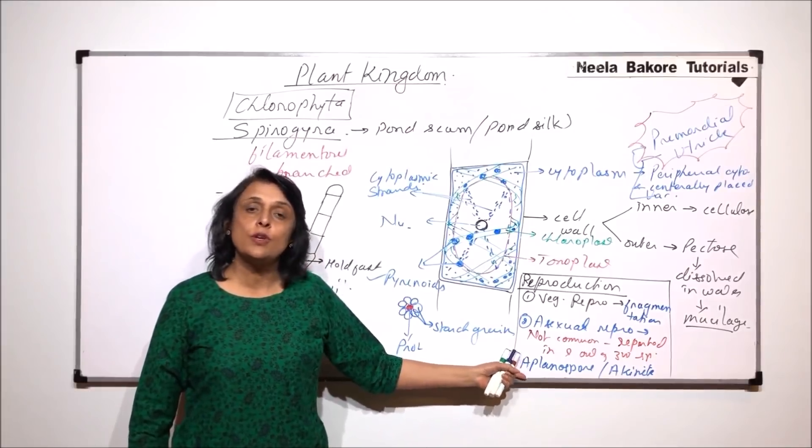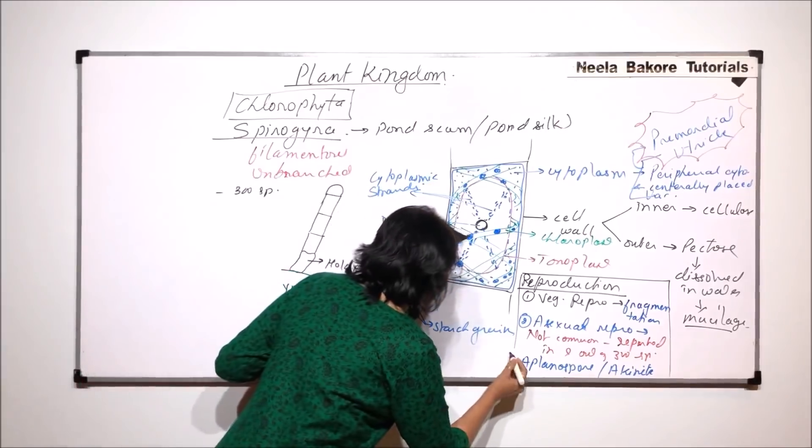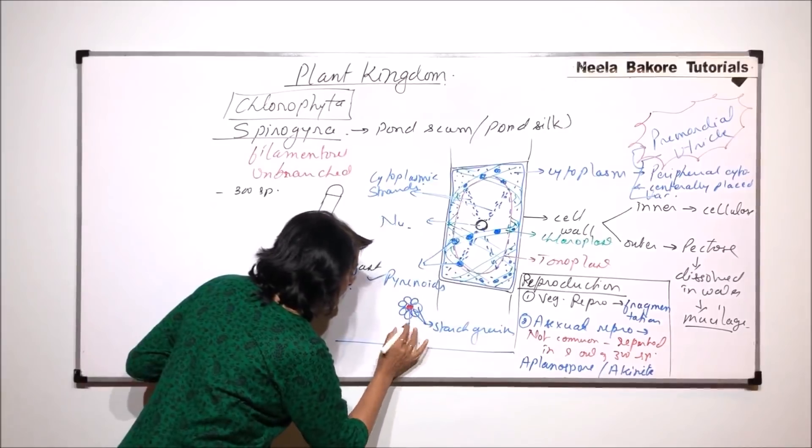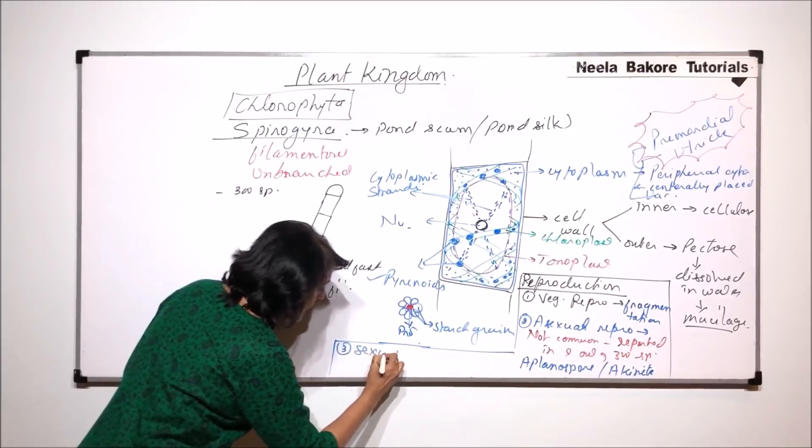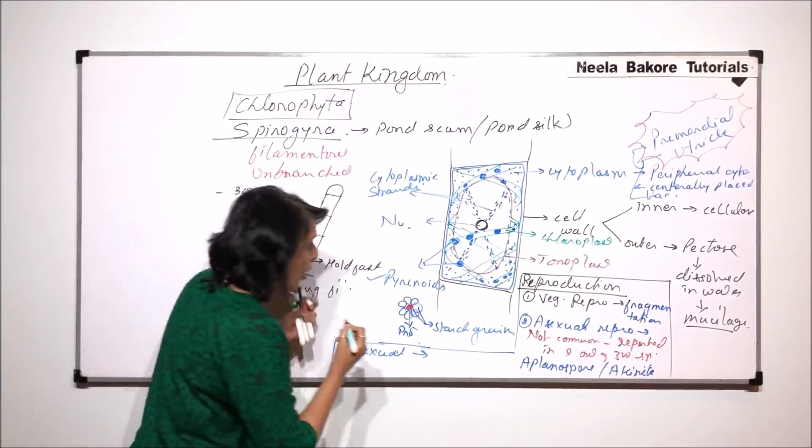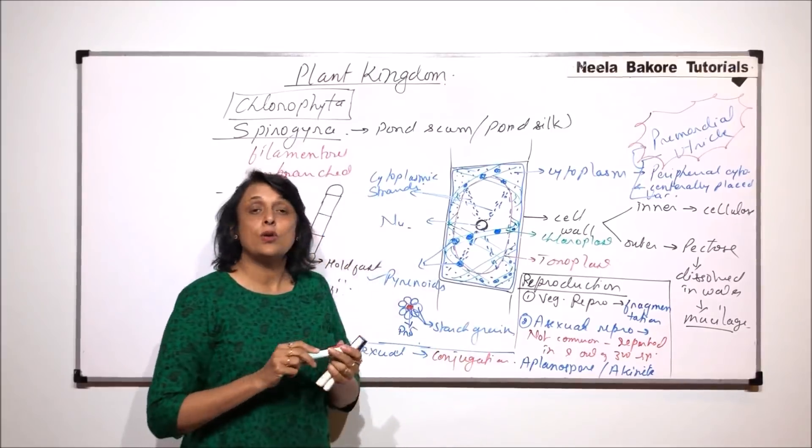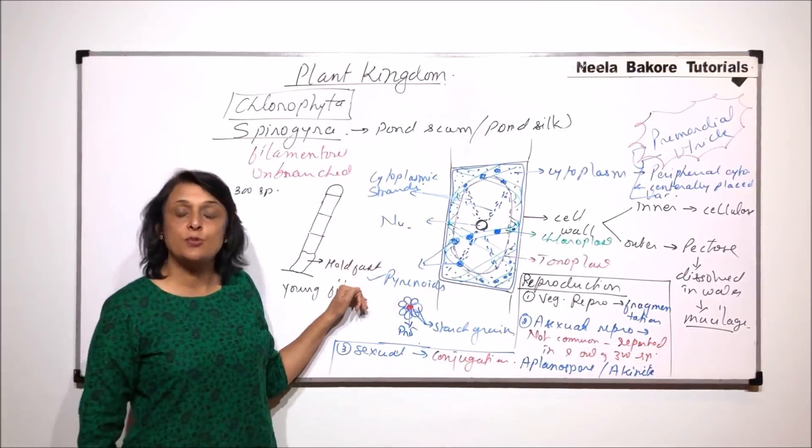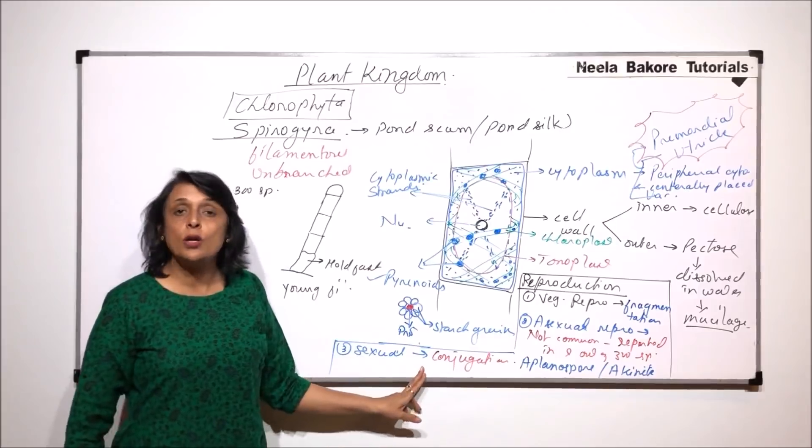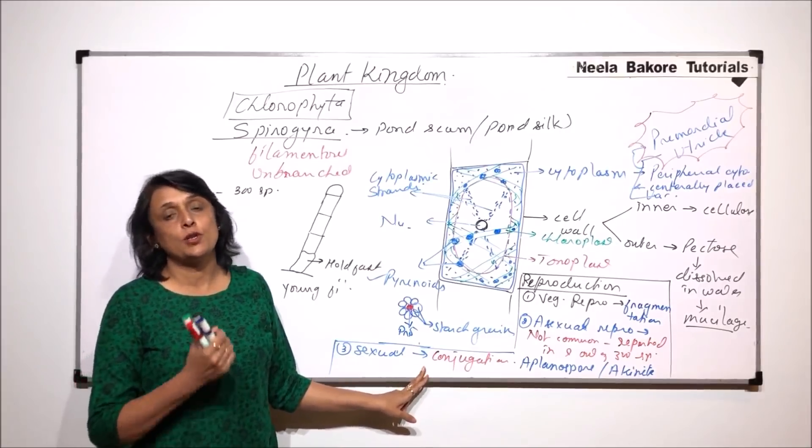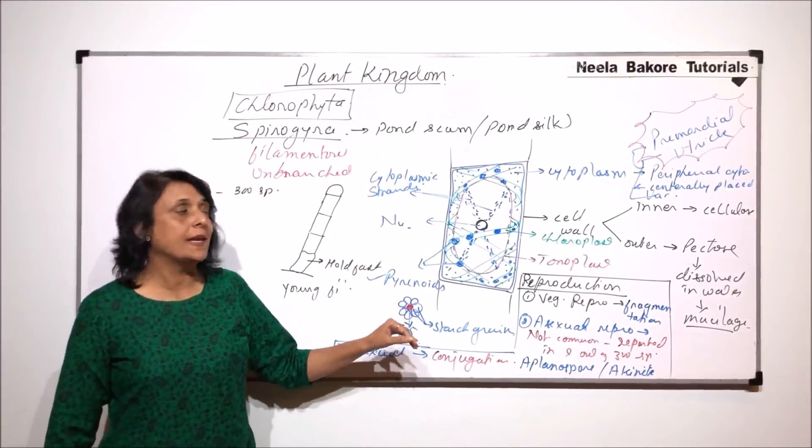The most common method of reproduction which is seen in case of Spirogyra is sexual reproduction and that takes place by conjugation. Now conjugation is also of two types which we will discuss in the next part. But during conjugation, the two filaments or the two cells of the same filament would conjugate and gamete formation and fusion will take place resulting in the formation of zygote. That method, that process, we will take up in the next part.